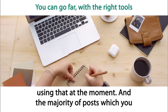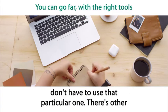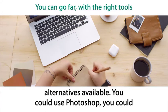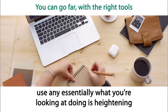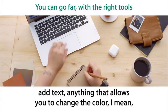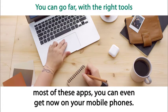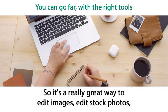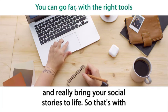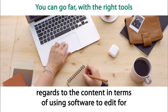The majority of posts which you see will have been produced using Canva, but you don't have to use that particular one — there are other alternatives available. You could use Photoshop, or essentially anything that allows you to heighten and edit the image, add text, or change the color. Most of these apps you can even get on your mobile phone now, so it's a really great way to edit images and photos and really bring your social stories to life.